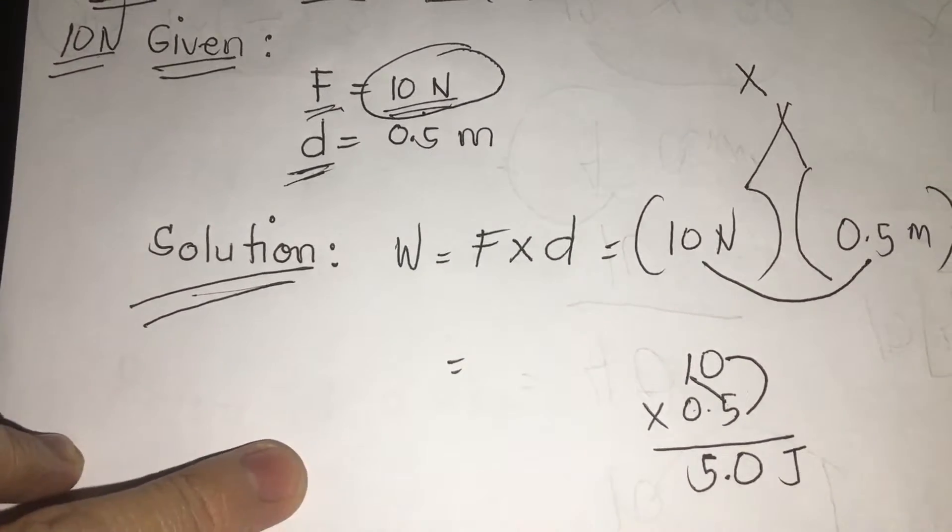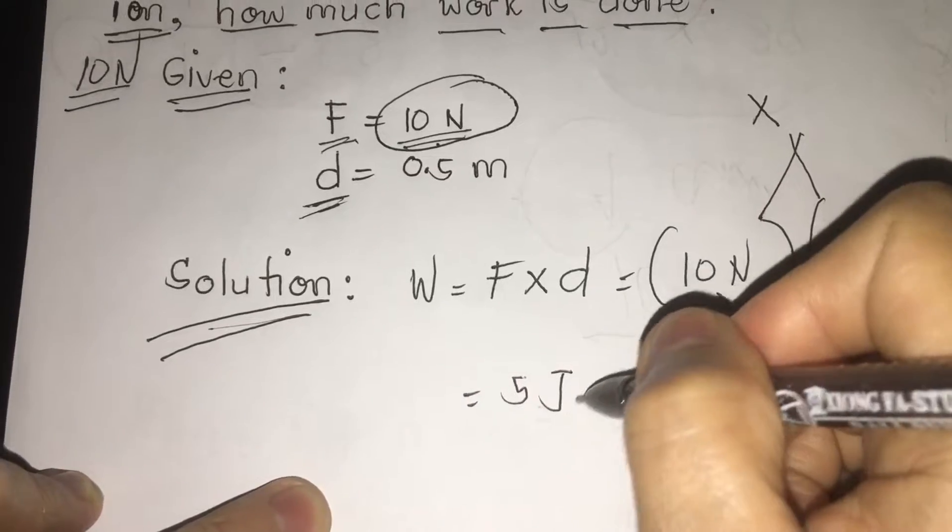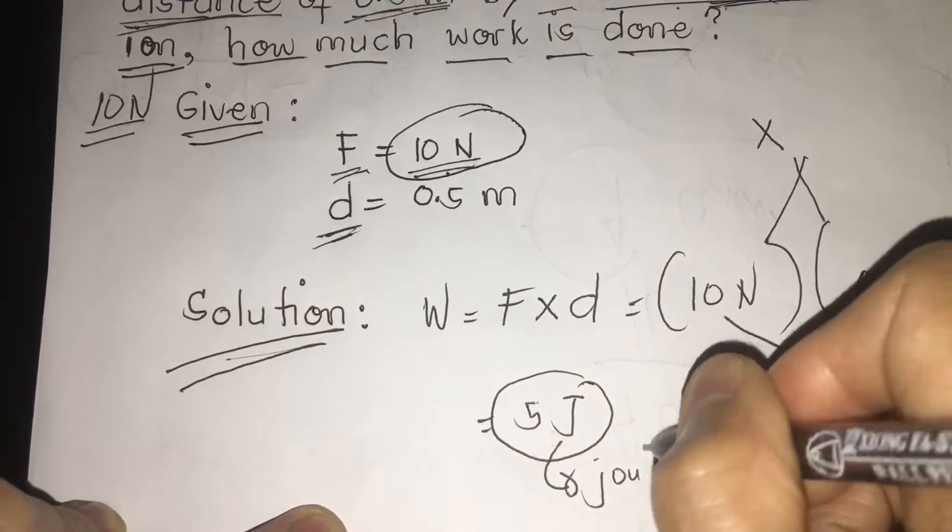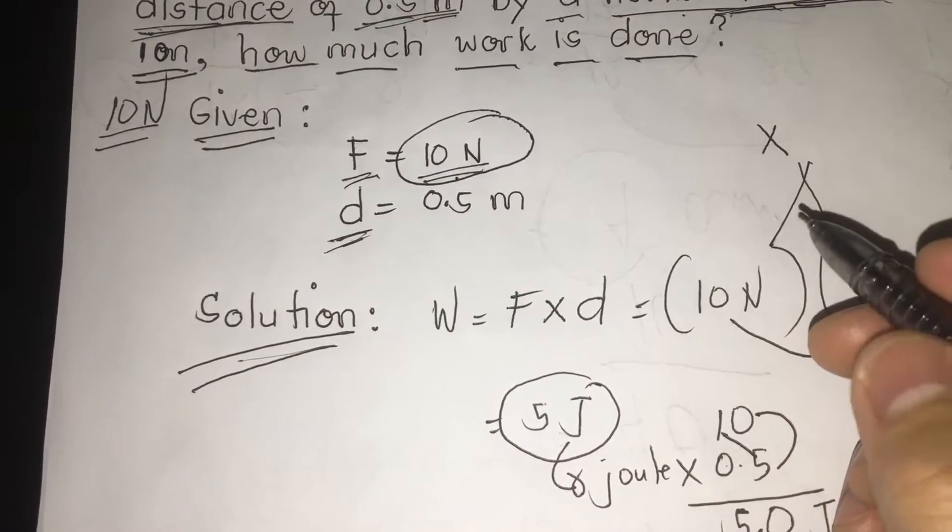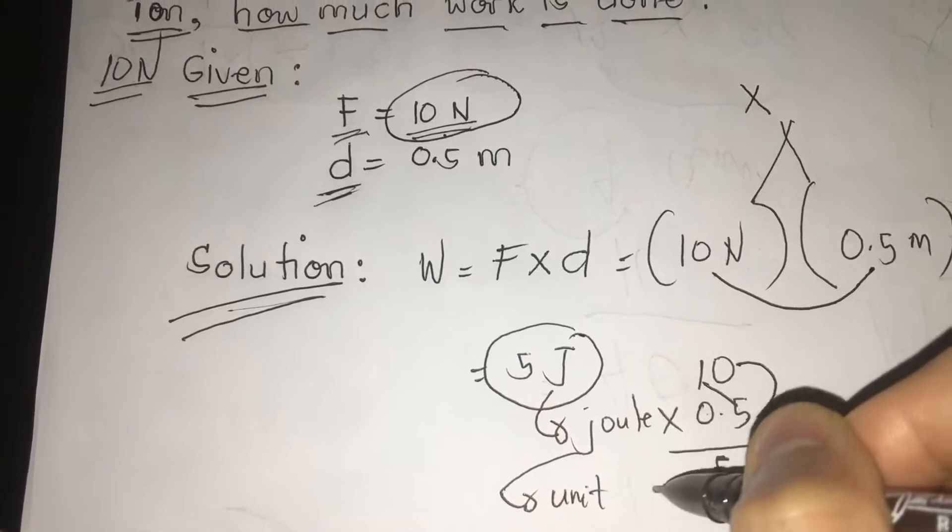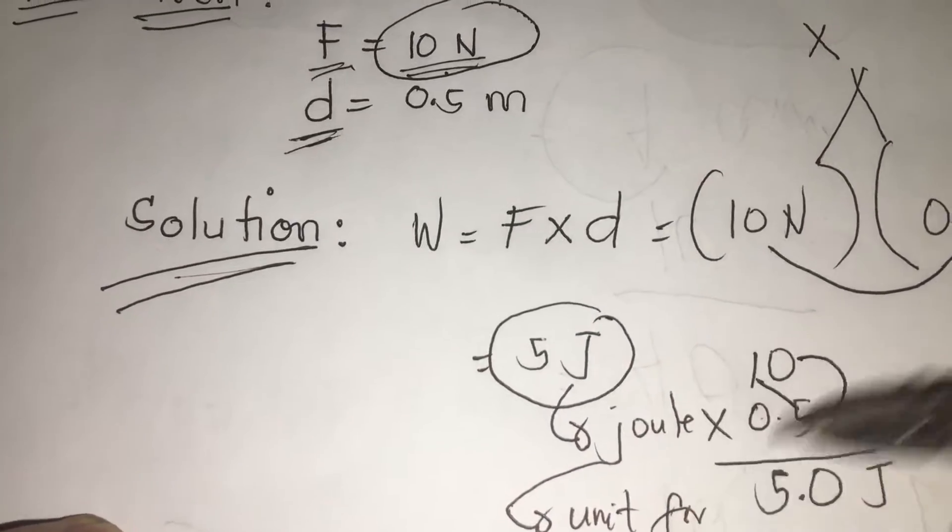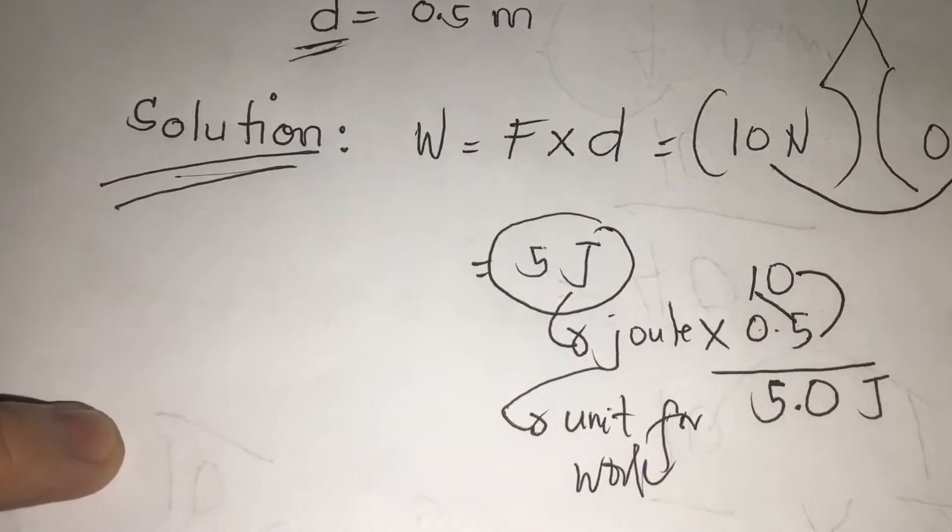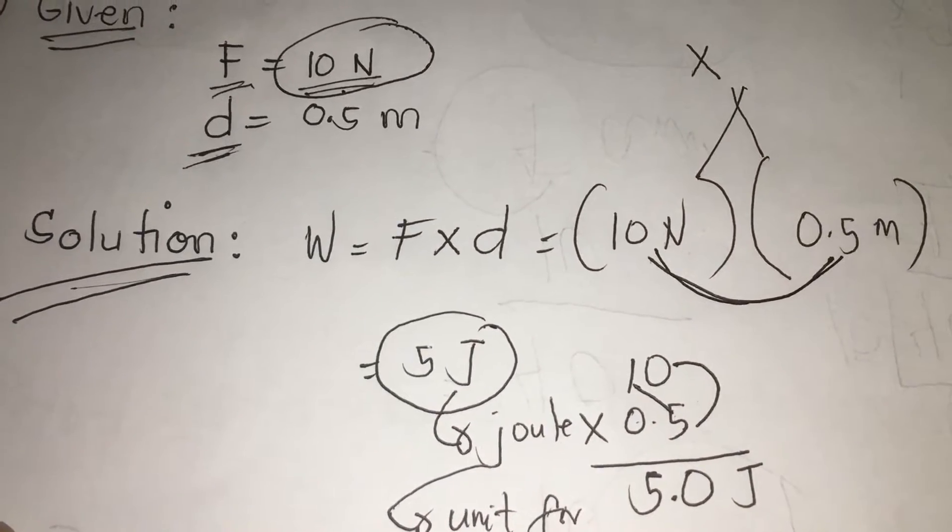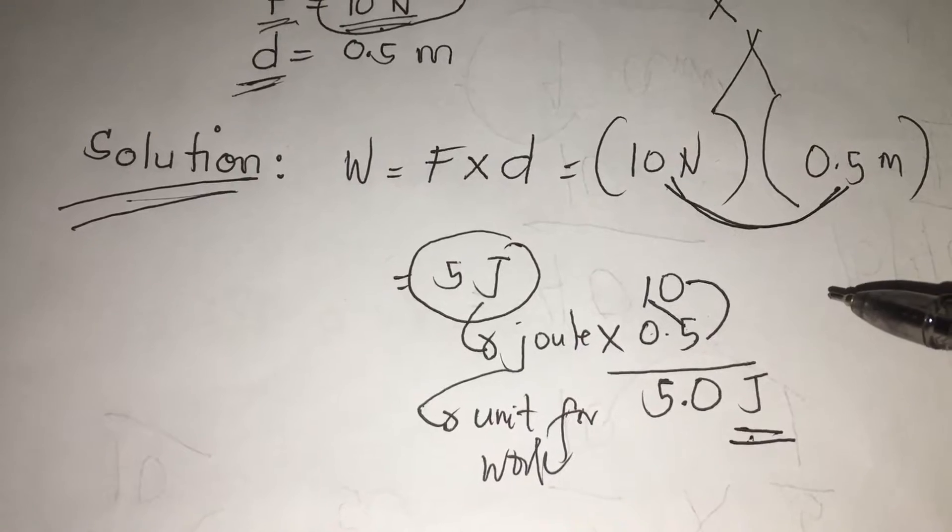5.0 J. So, our answer now is 5 J. Why J teacher? J is the unit for work, that is J. This is the unit of work, unit for work. So simple class, you multiply 10 and 0.5 meter. So, our unit for work is J, that is Joule. It stands for Joule.